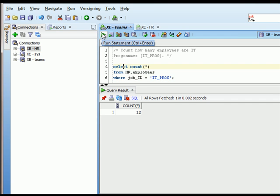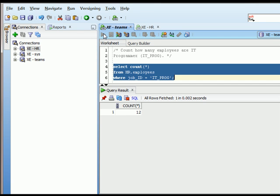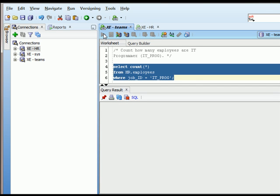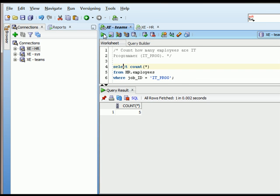It's counting from employees, HR.employees, where job underscore ID equals—let me point out, I'm doing IT underscore PROG in caps because that is how the data is stored. We'll look at how to deal with variations in upper and lowercase later on. I'm going to run this command. I see that there are five people listed as IT programmers.